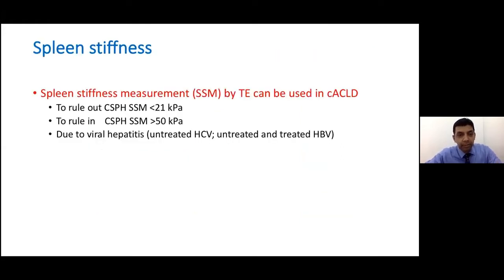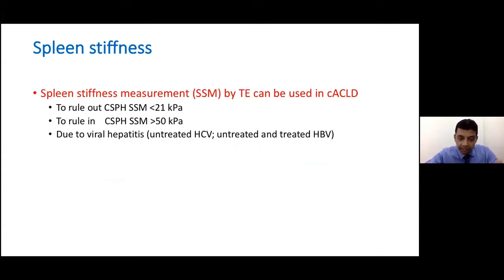FibroScan can also measure the stiffness of the spleen. Using similar cutoffs, splenic stiffness can be used to diagnose or exclude clinically significant portal hypertension.